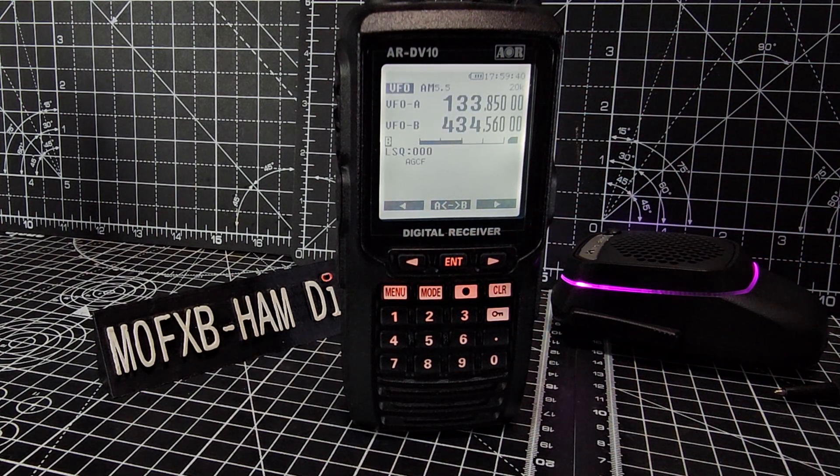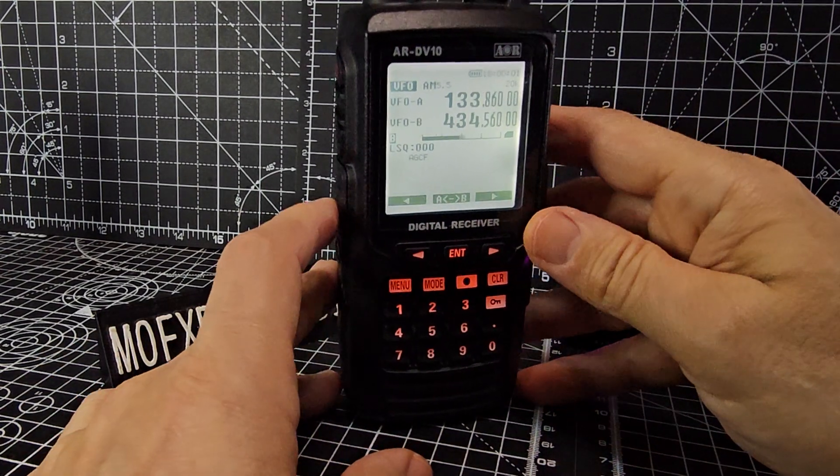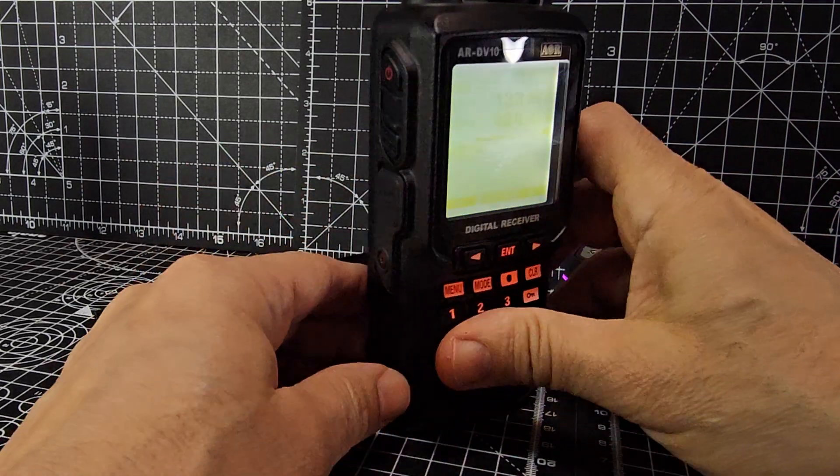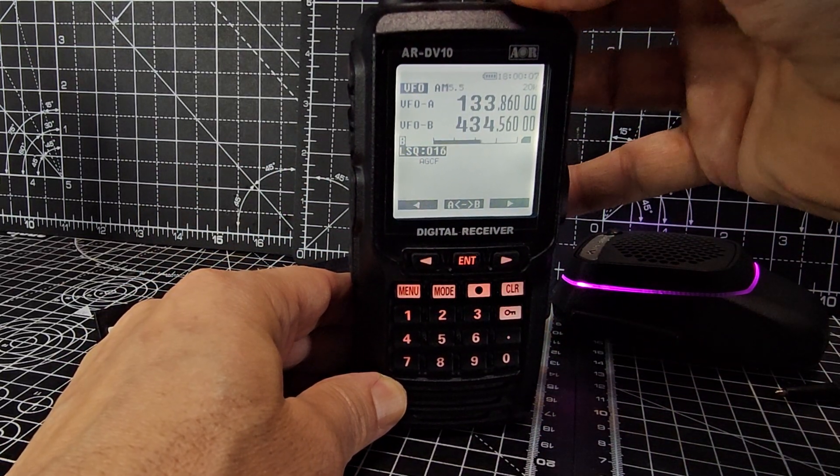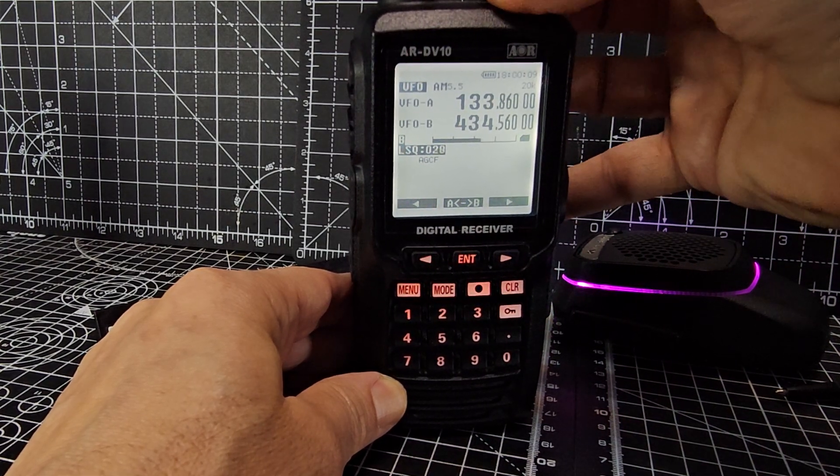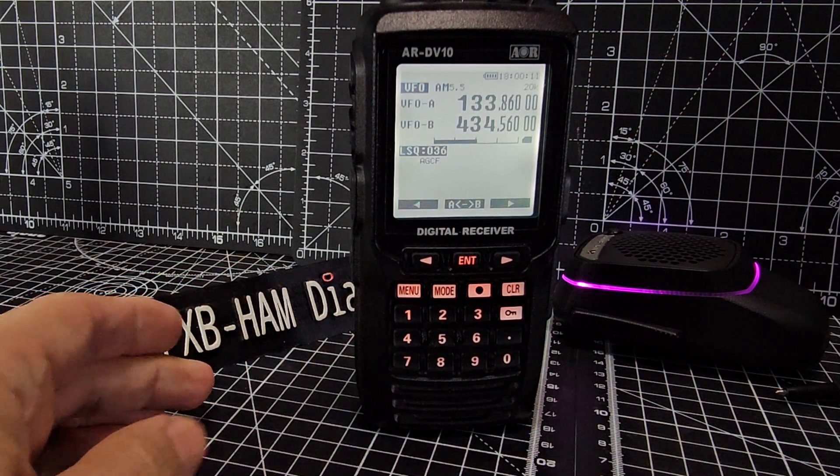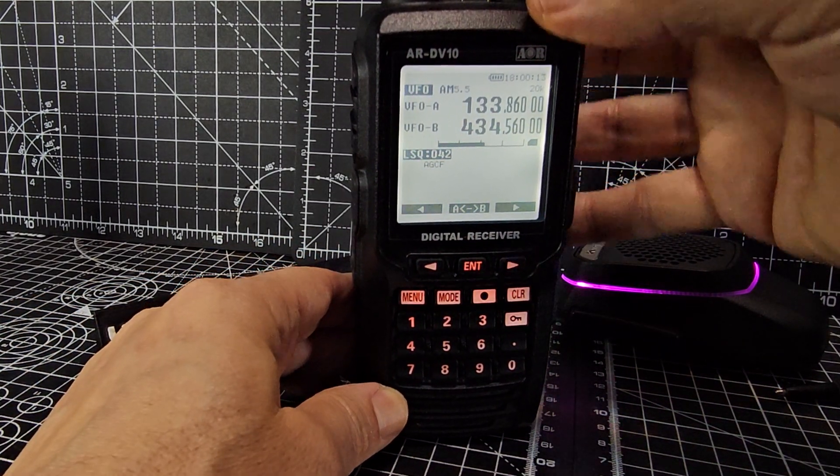You want to do the squelch. Just press here, squelch button, and then turn the bottom knob until you've risen above the squelch. A bit more. There you go, enter.